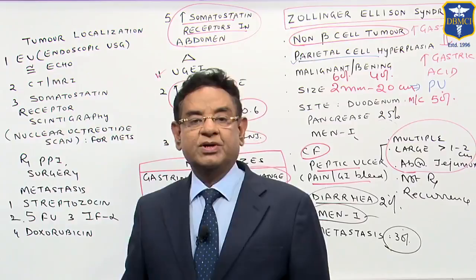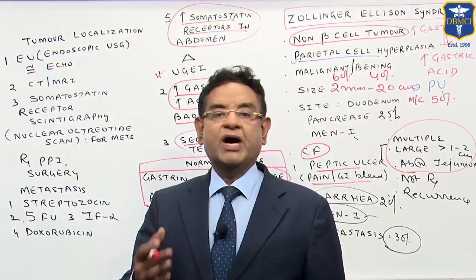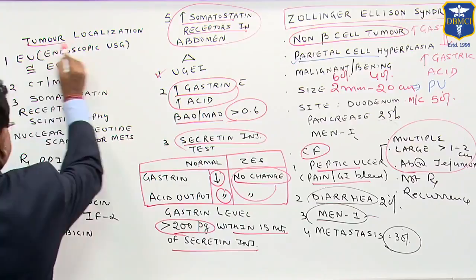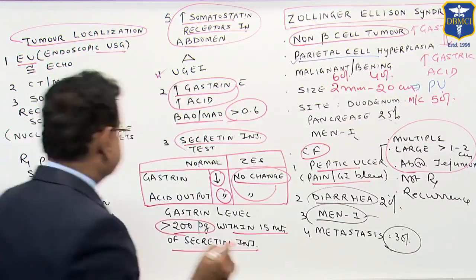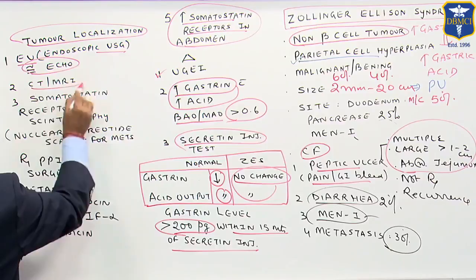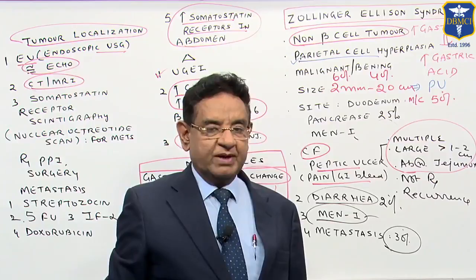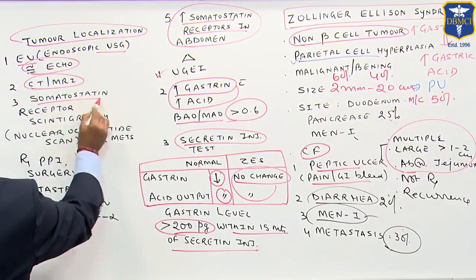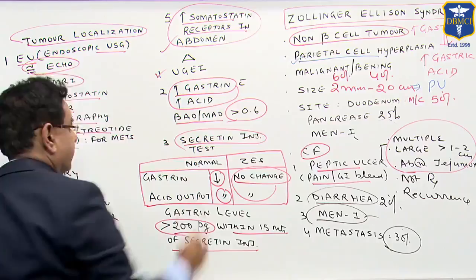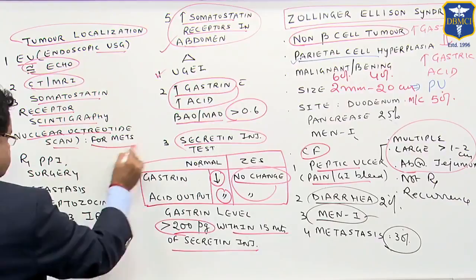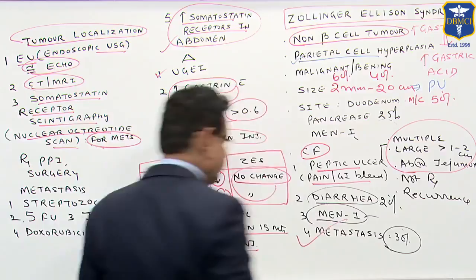This confirms the diagnosis of Zollinger-Ellison syndrome, but you also need to locate the tumour. For tumour location, we go for endoscopic ultrasound — similar to how echocardiography is used for cardiac lesions. CT and MRI are also done to locate the tumour. If CT or MRI are also normal, then you go for somatostatin receptor scintigraphy — the so-called nuclear octreotide scan — which also detects metastasis. Remember, metastasis is present in around 30 percent of cases.